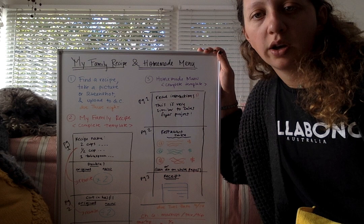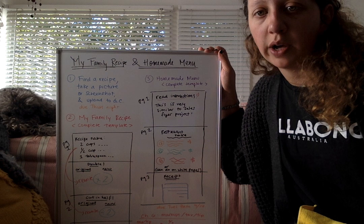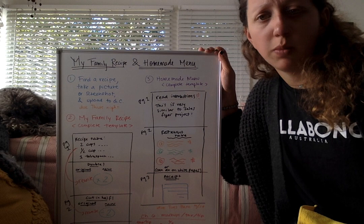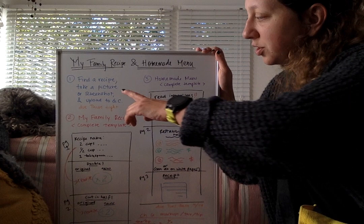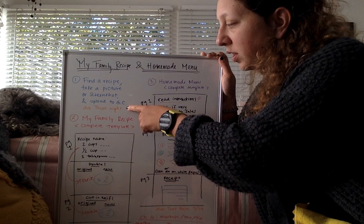So the first thing is today you should be finding a recipe. It can be something your family makes, something you make with your friends, even just something you find online. And you're just going to take a picture of it or a screenshot on your computer or phone. And then there's a Google Classroom assignment where you just upload that picture. It's five points, easy five points.